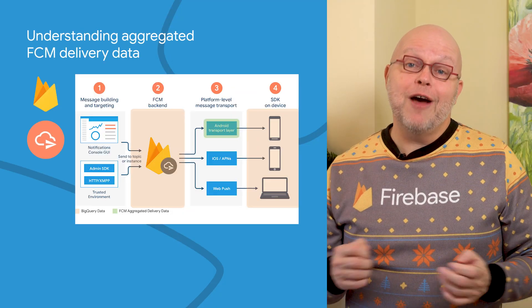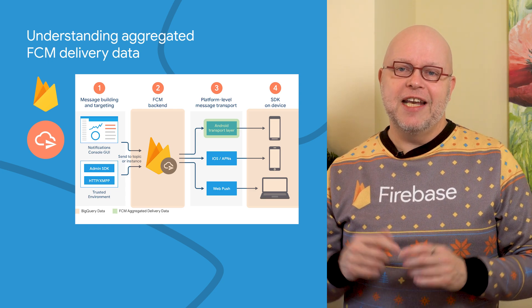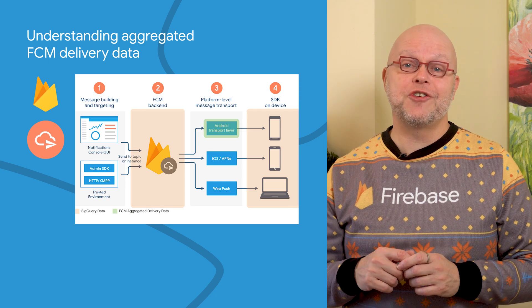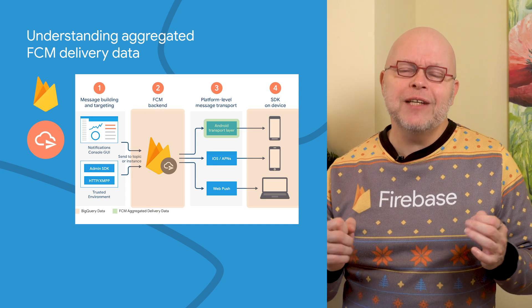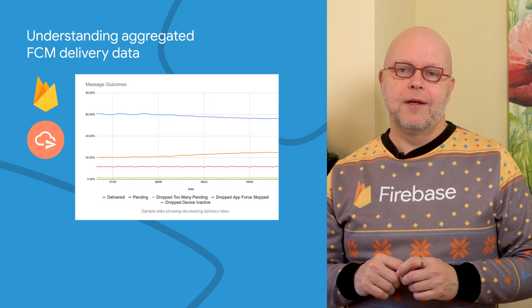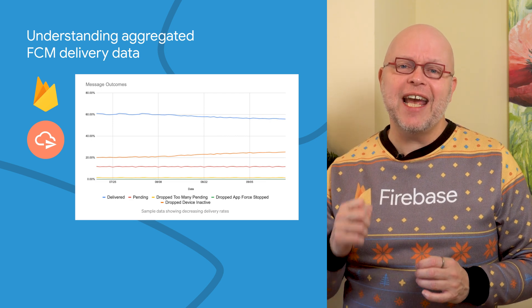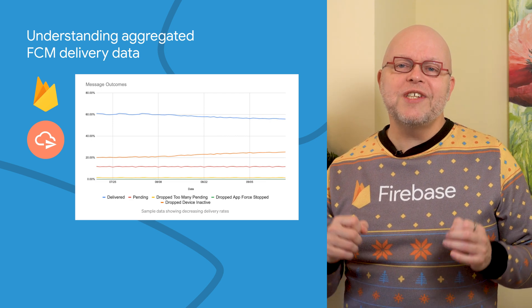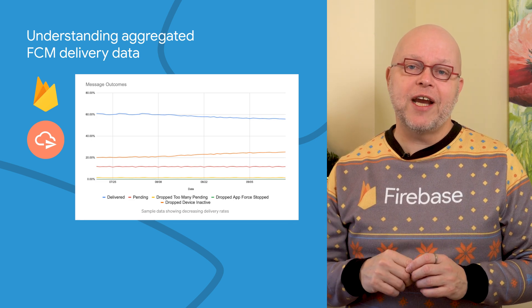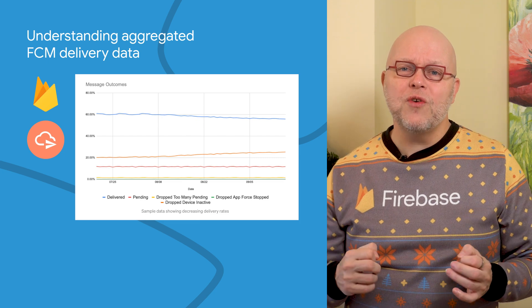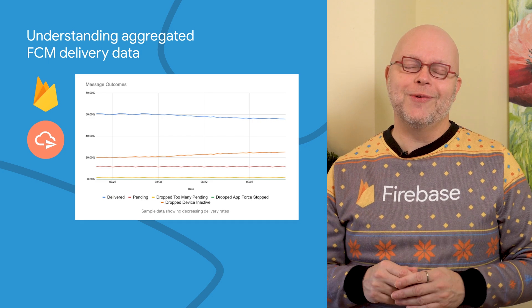When you use Firebase Cloud Messaging, understanding message delivery is key to running effective re-engagement campaigns. That's why we have documentation on how messages are delivered, tools to help you analyze delivery rates, and we allow you to export detailed delivery data to BigQuery. One of our engineers wrote an article about the aggregated delivery data that you can get from FCM through its API. The article looks at common patterns in this data, such as a constant decrease in delivery rates like we see over here, which is often caused by not pruning your token registry. See the link to the full article below for more use cases.